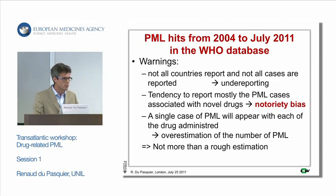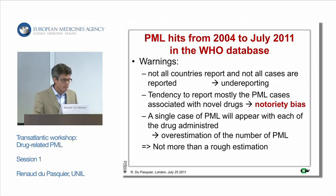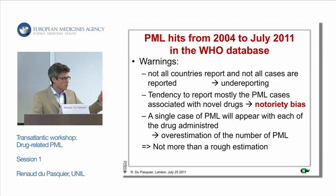For that, we went into the WHO database, but with several warnings. Not all countries report cases, and there has been estimation of a very high level of under-reporting. There is also a tendency to report mostly PML cases associated with novel drugs — the so-called notoriety bias. And when a referral is well done, if the patient with PML had a cancer with different drugs, then the PML cases will appear with each of these drugs, which could lead to an overestimation.